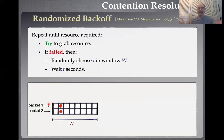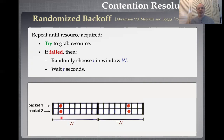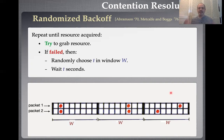If they fail, they randomly choose some time t in a window of size w, wait some period of time, and then broadcast. If they succeed, we're happy. In this case both packets chose the same value of t, so they collide again — a second collision. They repeat the process, choose a random time slot and broadcast. Again there's a collision. They try again. This time they get lucky — they choose two different time slots. We have solved the contention resolution problem. Both packets have gotten to broadcast. This is randomized back-off — a very simple paradigm.